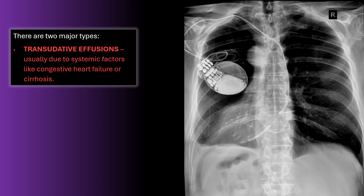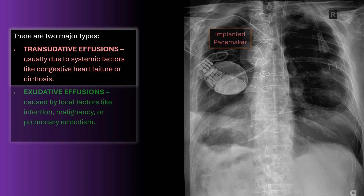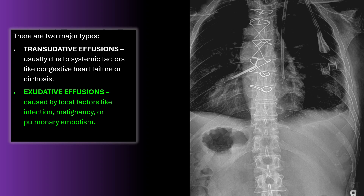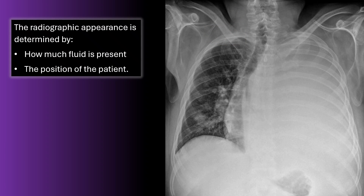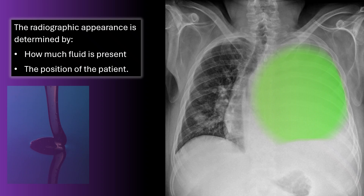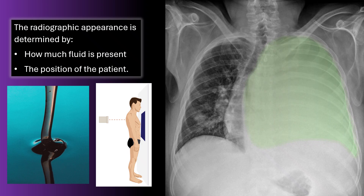There are two major types of pleural effusions. A transudative effusion is usually due to systemic factors like congestive heart failure or cirrhosis. Exudative effusions are caused by local factors like infection, malignancy, or pulmonary embolism. Don't forget the radiographic appearance is determined by how much fluid is present and the position of the patient.